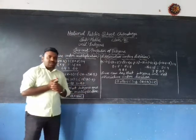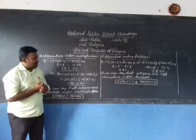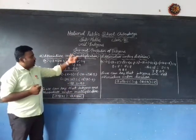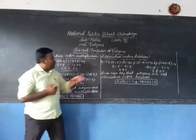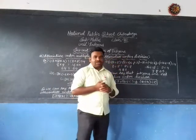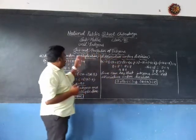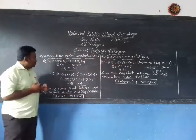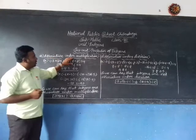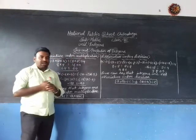In today's class, we are discussing associative property under multiplication and associative property under division. So the third one is: associative under multiplication.